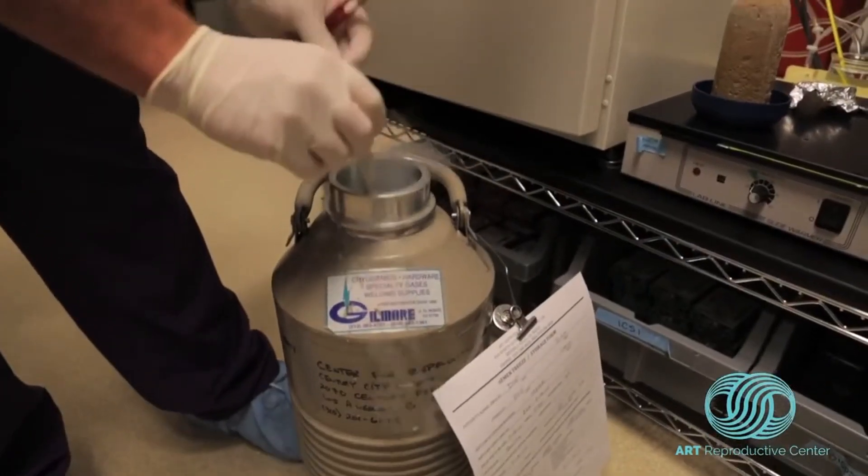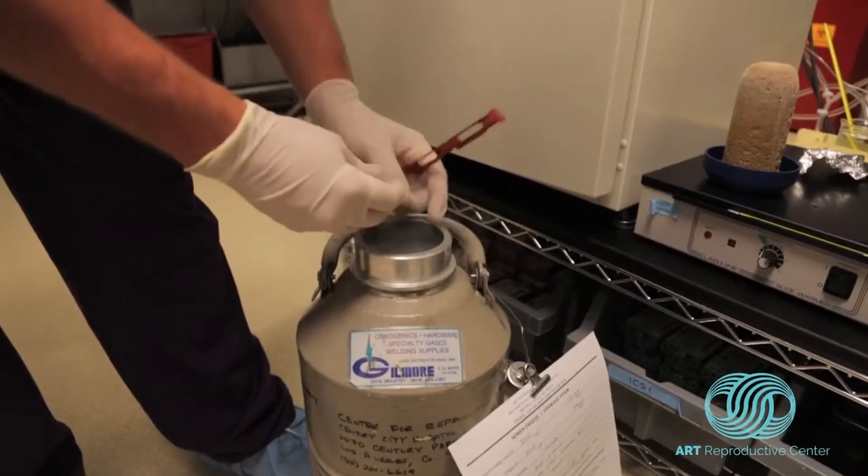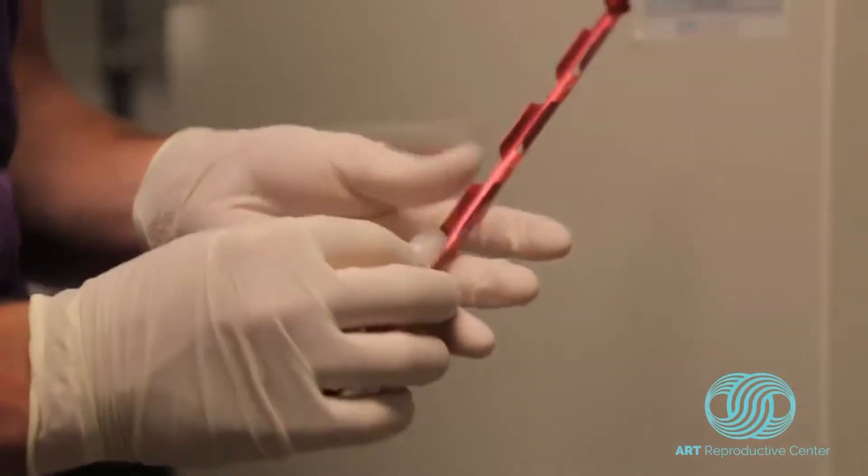This video shows you the process of a sperm vial being thawed. You can see the embryologist removing the vial from the cryotank where it has been stored in liquid nitrogen.